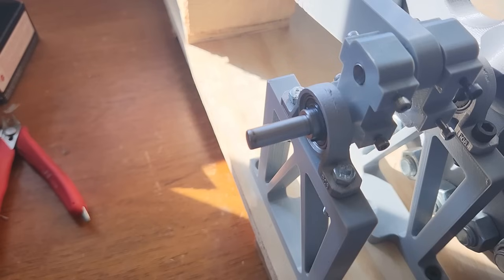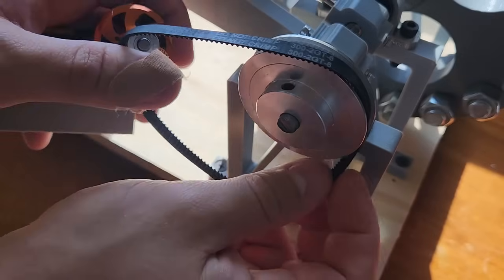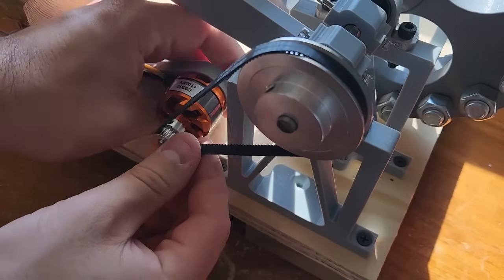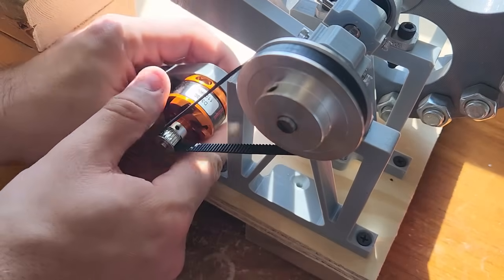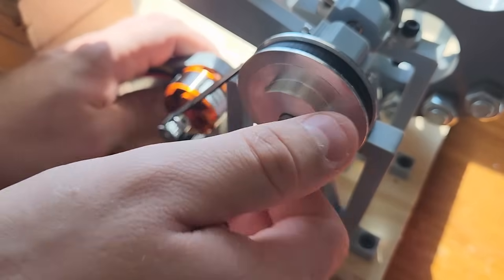Next I mount this 80 tooth GT2 pulley onto the crankshaft. The motor will have a 16 tooth pulley giving a 5 to 1 reduction so the maximum unloaded speed should be about 2600 rpm or 44 hertz. In reality though I doubt I'll run anywhere close to that.